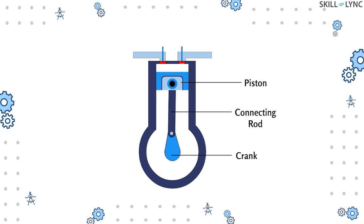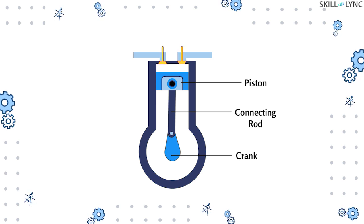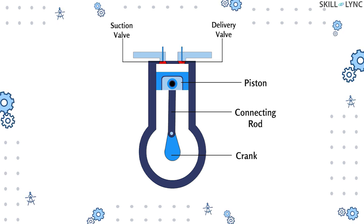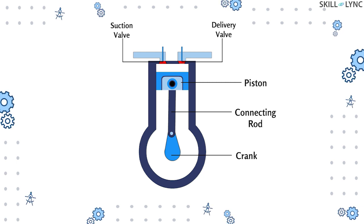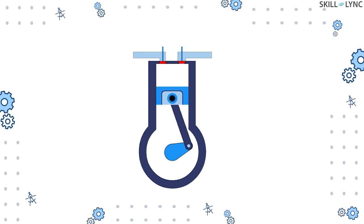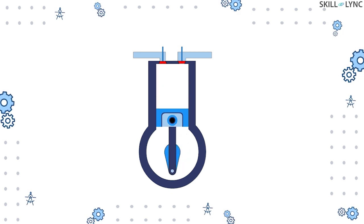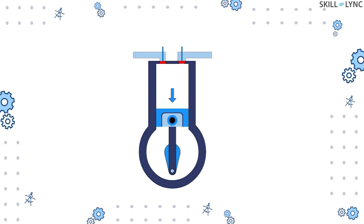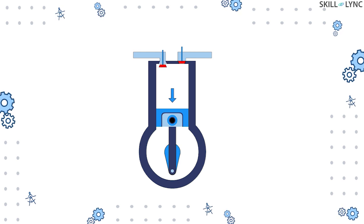The piston is connected to a crank via a connecting rod, and two valves that look like metal flaps are located at the top of the cylinder. Of the two valves, the one located above is called the delivery valve and the one located underneath is called the suction valve. When the motor drives the crankshaft, it makes the piston reciprocate inside the cylinder. As the piston moves down, it creates a vacuum inside the cylinder, which opens the suction valve and air from the atmosphere enters the cylinder.